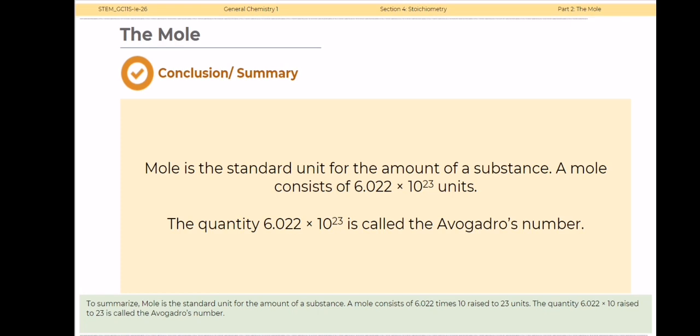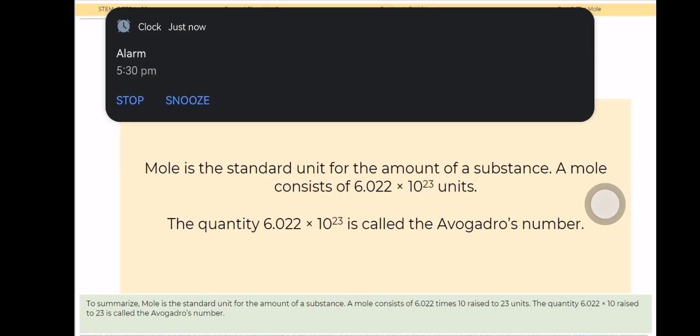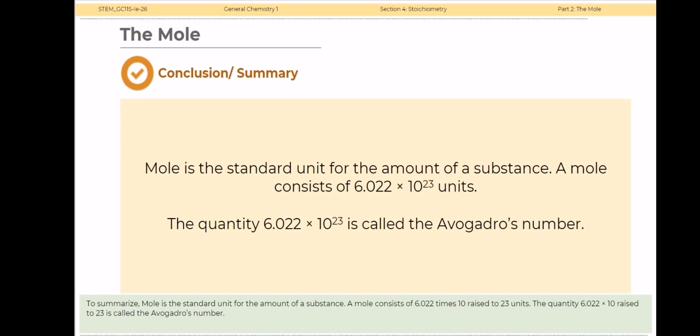To summarize, mole is the standard unit for the amount of a substance. A mole consists of 6.022 × 10²³ units, and the quantity of 6.022 × 10²³ is called the Avogadro's number.